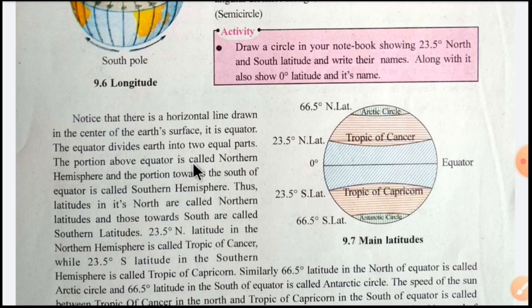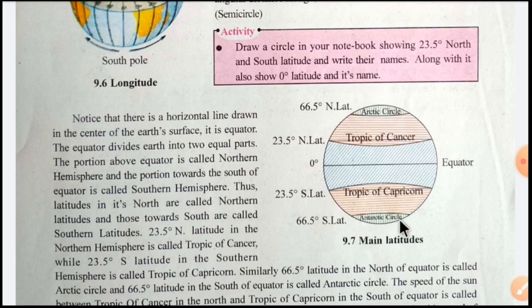The portion above the equator is called the Northern Hemisphere, and the portion towards the south of the equator is called the Southern Hemisphere. So the upper side is the Northern Hemisphere, and the downside — the south part — is called the Southern Hemisphere.